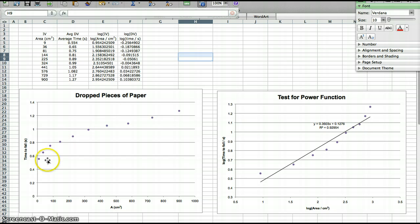And a power function where the power is between 0 and 1. And I take this data. Here's my independent variable. I change the surface area of pieces of paper as they fell from a fixed height, and I measured the time.